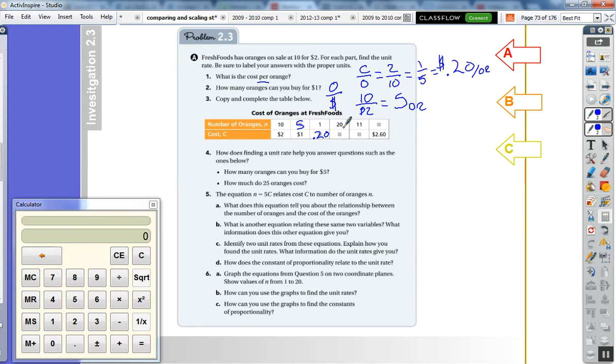20 oranges is going to be 20 cents times 20, or we could do 20 is two groups of 10, so that's going to be $4 because each group of 10 is $2. For 11 oranges, we'll use our unit rate: 20 cents per orange times 11 oranges is $2.20.